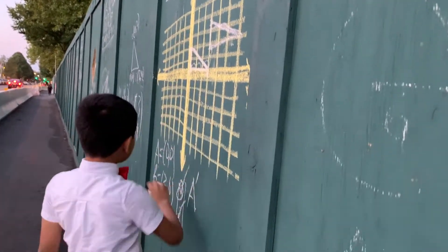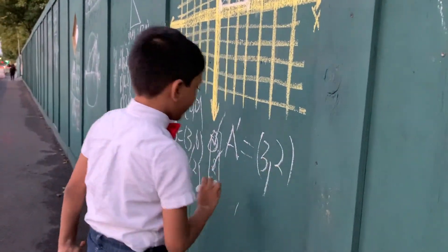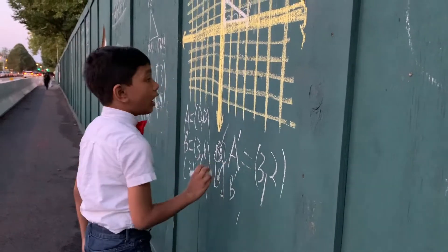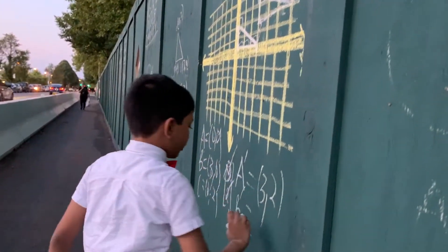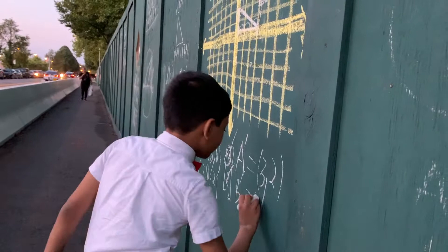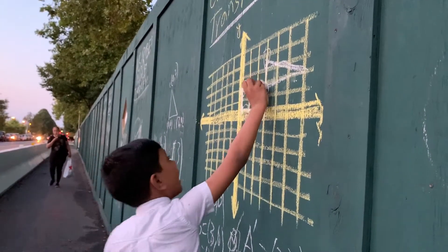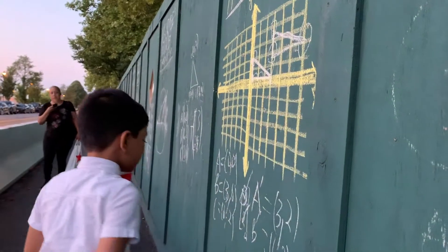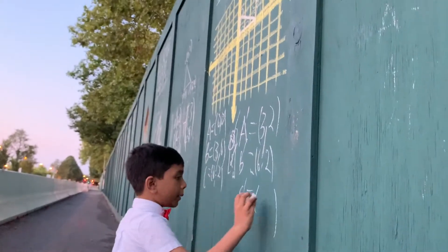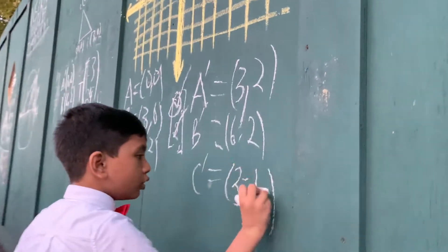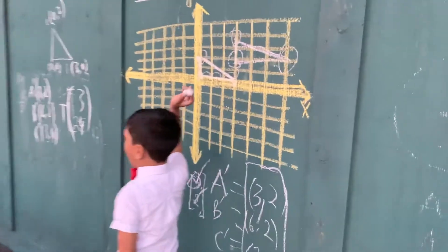A prime: add the coordinates — 0 plus 3 is 3, and 0 plus 2 is 2, so A prime is (3, 2). B prime: 3 plus 3 is 6, and 0 plus 2 is 2, so B prime is (6, 2). And finally C prime: the original coordinates are (0, 2), so adding the translation gives us (3, 4). Those are all the new points on our triangle.